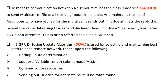Once neighborship is formed, if there is an update in the network, it is sent using the multicast address 224.0.0.10. EIGRP maintains a list of neighbors who replied to the multicast. If a reply is not received, it resends the same data using unicast, and declares the neighbor dead if no reply is received even after 16 unicast attempts.